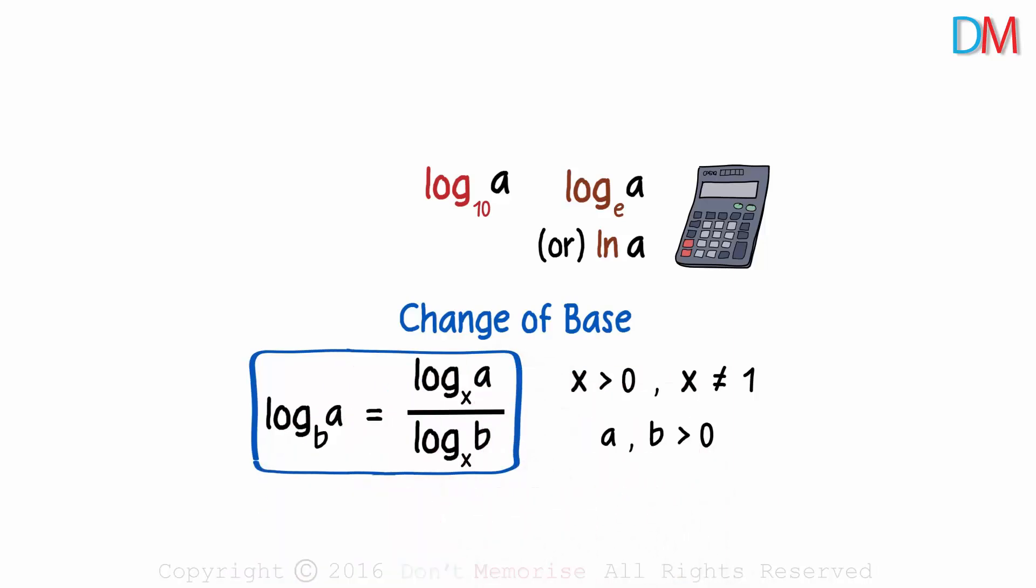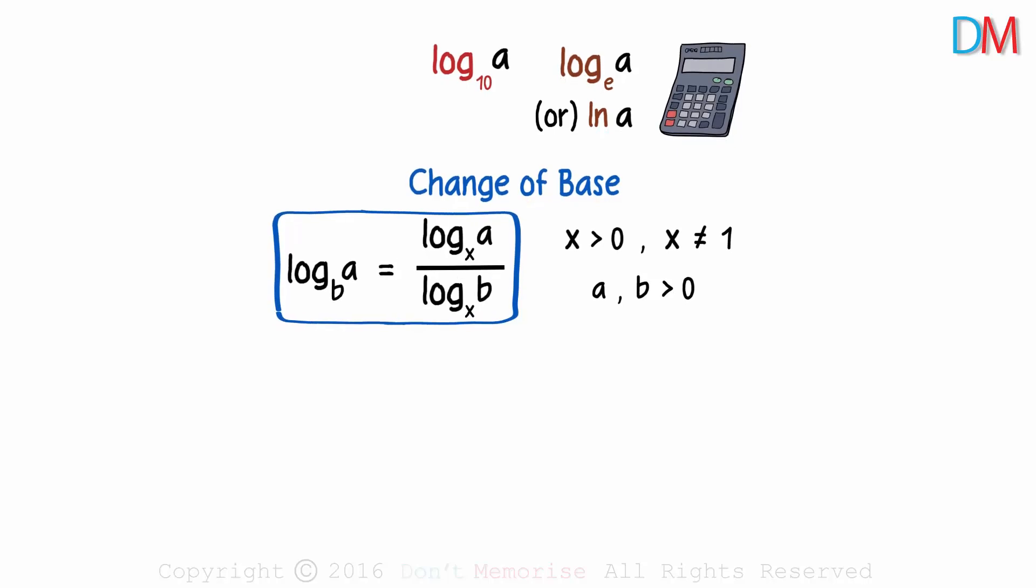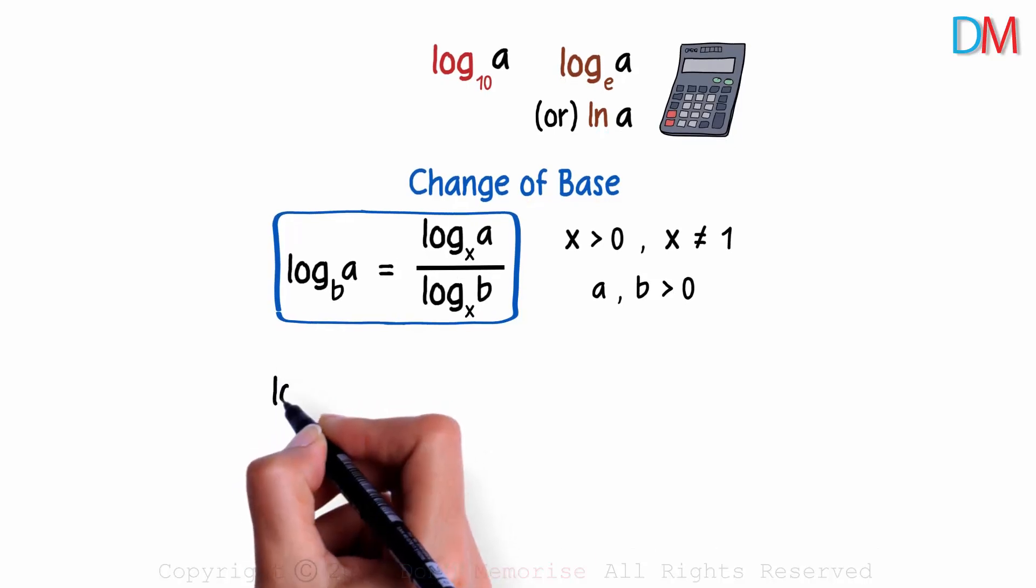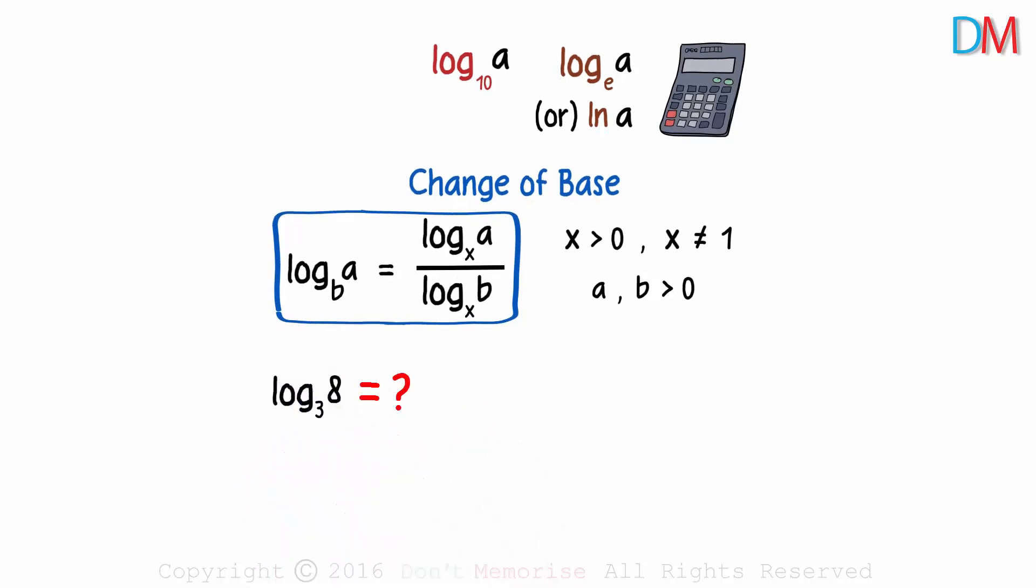Quite easy to remember actually. The argument becomes the numerator, the base becomes the denominator, and the bases here will be the same and can be anything. Coming back to our question, how do we find the value of log of 8 to the base 3?